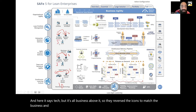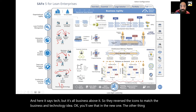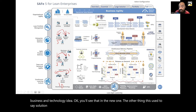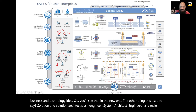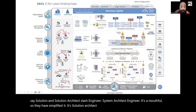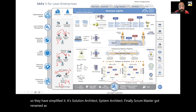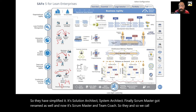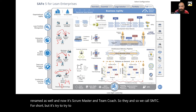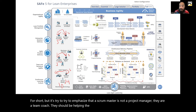They reversed the icons to match the business and technology idea. The other thing is this used to say 'solution architect slash engineer' and 'system architect slash engineer' — it's a mouthful. So they've simplified it: it's 'solution architect' and 'system architect.' Finally, Scrum Master got renamed as well — now it's 'Scrum Master and Team Coach,' or SMTC for short, to emphasize that a Scrum Master is not a project manager; they are a team coach helping the team become high performing.